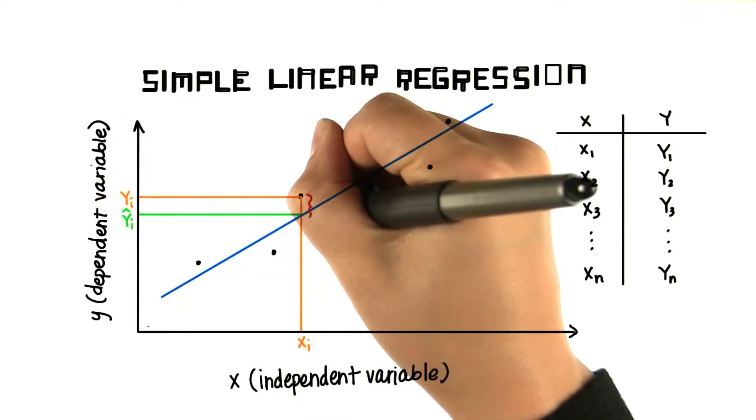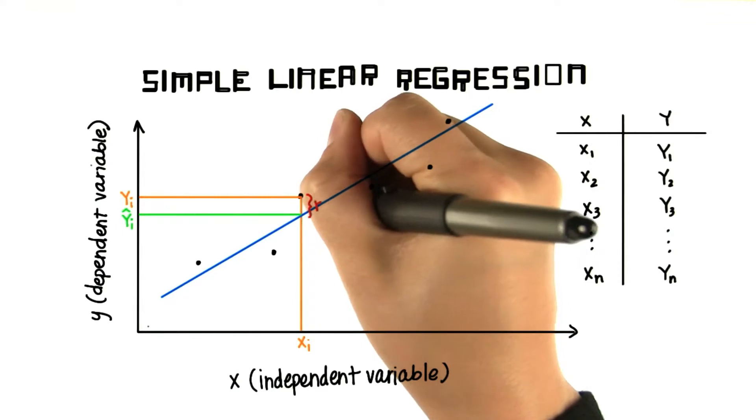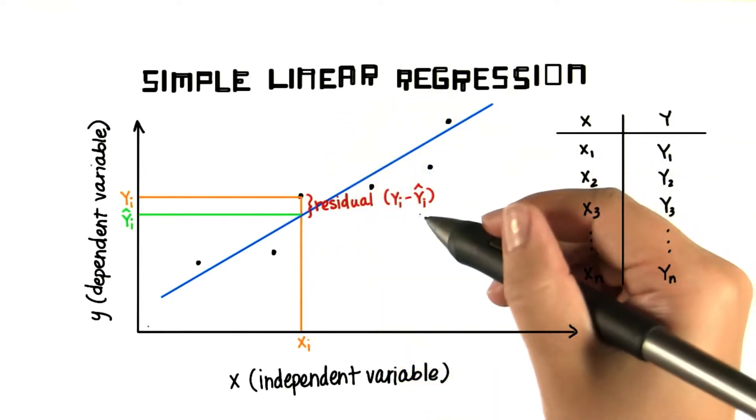The distance between the observed value and the expected value is called the residual. And this is an error term.